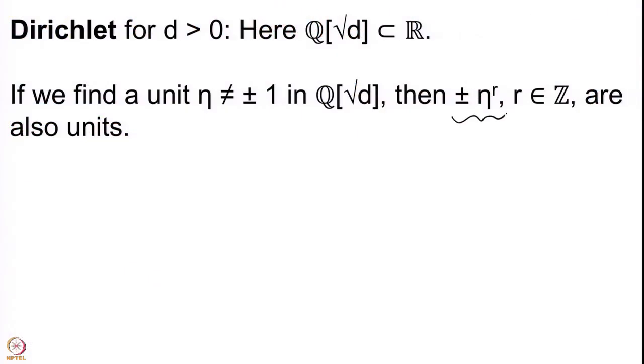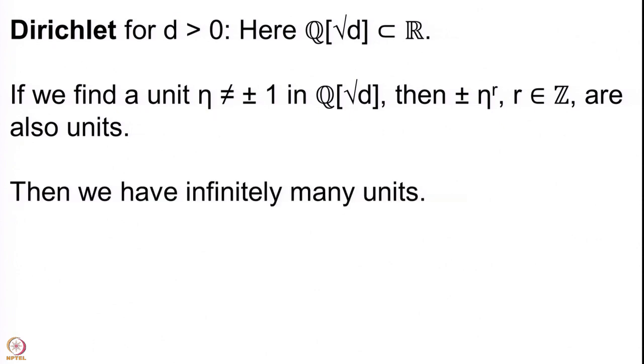All the powers ±ηʳ will also be units, and there are infinitely many of them. So, finding a single non-trivial unit immediately proves Dirichlet's theorem for D > 0 — the theorem states the unit group is infinite when D is positive. Our aim is now to find a non-trivial unit in Q(√D) for positive D.